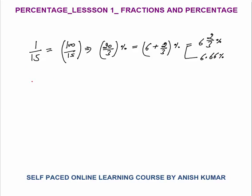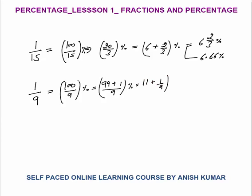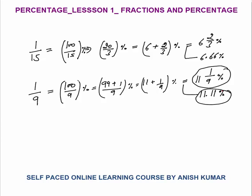One by 9 equals 100 by 9 percent. Since 100 is not divisible by 9, write as 99 plus 1 by 9, giving 11 plus 1 by 9 percent — that is 11 and 1/9 percent, or 11.11 percent. This is very useful: for example, if you see 22.22 percent, you know that 2 by 9 equals 22.22 percent.